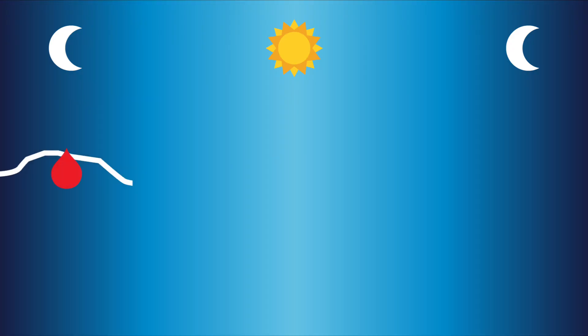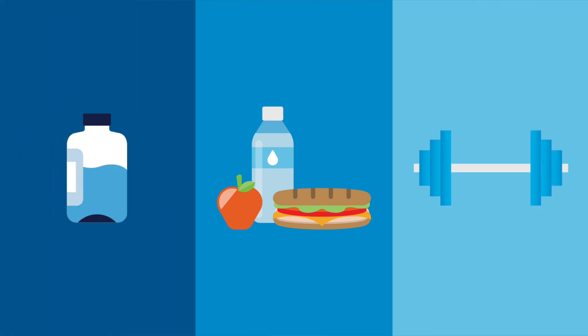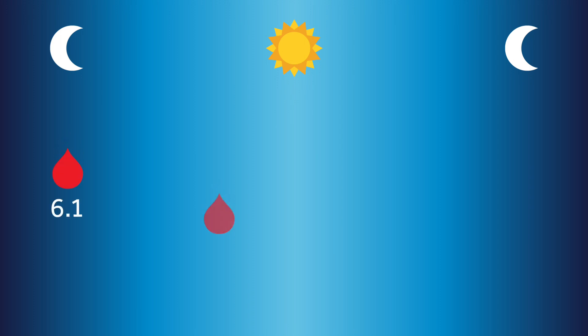Lisa knows her glucose changes constantly throughout the day. Things like food, insulin, and exercise all affect her glucose levels. Checking her BG lets Lisa know what her glucose level was at that particular moment in time. But the individual BG readings didn't tell Lisa what her glucose did in between the readings. Did it go high or did it go low? And which way is it heading now?